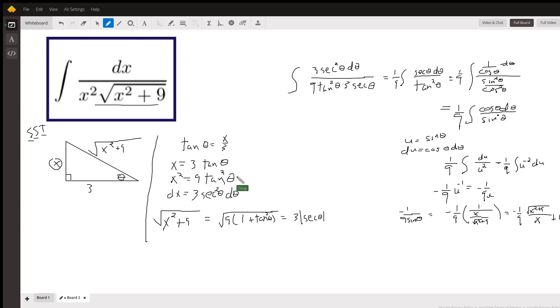X squared, 9 tangent squared theta. DX, 3 secant squared theta d theta. And the square root of X squared plus 9, using the substitution that 1 plus tangent squared is secant squared, is 3 secant theta. So we'll substitute all this into the original.